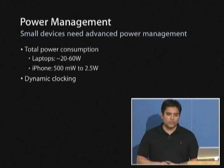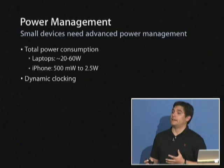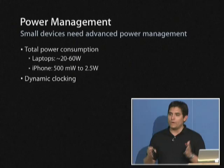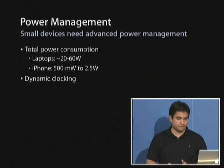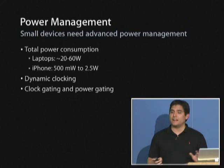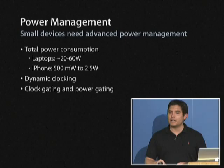To minimize power consumption, the system uses dynamic clocking — turning down CPU and GPU speed when not in use — and clock gating and power gating, turning on and off blocks of chips whenever possible. If a chip isn't being used, it shouldn't be on. This is how the iPhone gets any meaningful battery life at all.